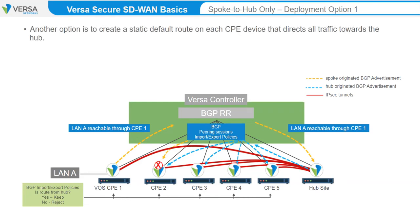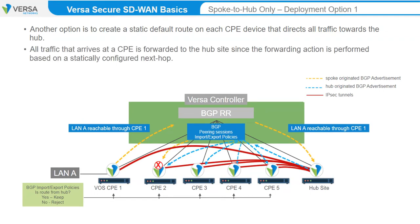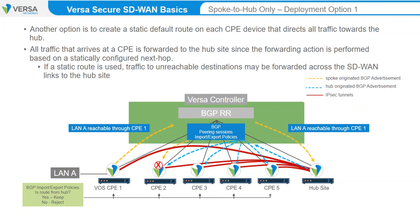Another option is to create a static default route on each CPE device that directs all traffic, both SD-WAN and non-SD-WAN traffic, towards the hub. With this topology, all traffic that arrives at a CPE is forwarded to the hub site, regardless of whether or not the remote destination is reachable, since the forwarding action is performed based on a statically configured next-hop. The potential drawback to this design is that WAN link bandwidth can be utilized for non-reachable destinations, because only the hub site has full reachability information.